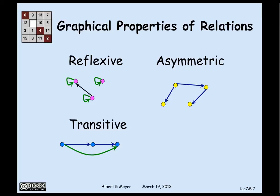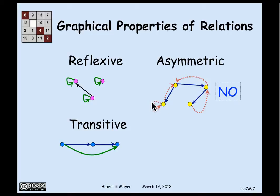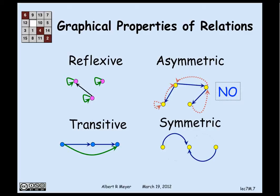Asymmetric means that whenever you have an edge from one vertex to another, there is no edge back. If there's an edge from this vertex to that vertex in blue, there is no edge going back in the other direction, nor is there ever a self-loop in an asymmetric graph. In the symmetric case, wherever there's an edge, there's an edge that goes back the other way. That can help you remember what these properties mean.